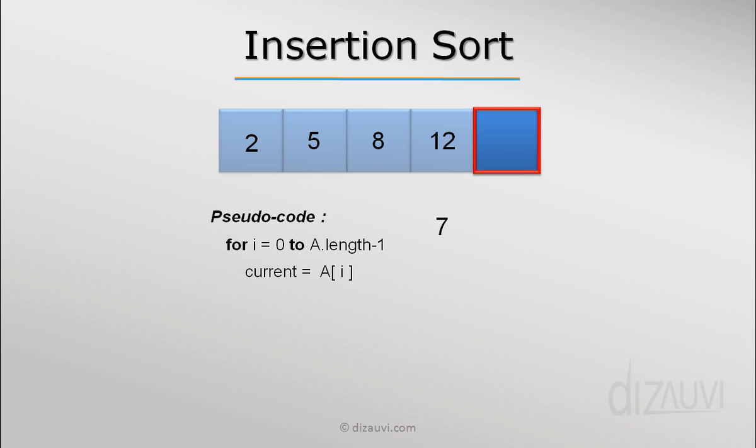Then we start accessing the elements of the array starting from the previous index, which is i minus 1. Now we would like to compare the elements of the array one by one with the current element, going to the left to check if the current element is less than these elements.